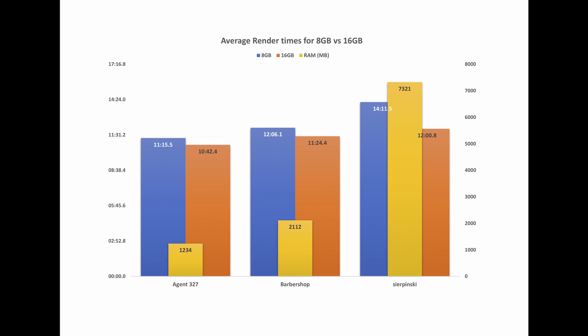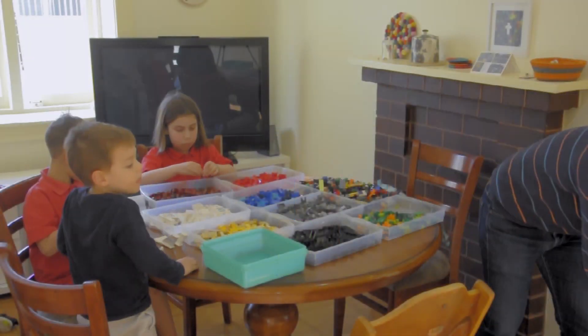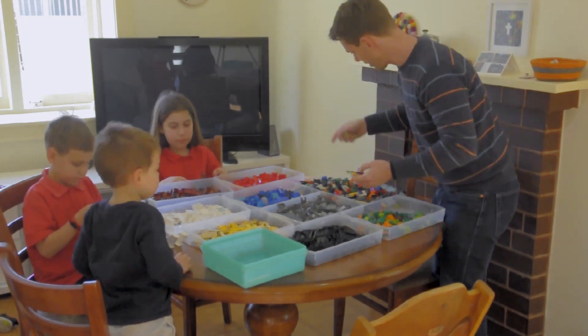So we want to know what's going on in this case, and this graph gives us a hint. In yellow you can see what Blender reported as how much RAM each of these scenes used. For Agent 327 and Barbershop there wasn't really a huge amount of RAM used compared to the 8 gigabyte configuration and certainly not the 16. But for the Sierpinski scene, almost an entire 8 gigabytes of RAM was used.